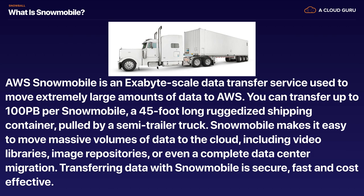Snowmobile is just insane. It's an exabyte-scale data transfer service used to move extremely large amounts of data to AWS. You can transfer up to 100 petabytes per Snowmobile. It's basically a 45-foot-long ruggedized shipping container pulled by a semi-trailer truck, making it easier to move massive volumes of data to the cloud, including video libraries, image repositories, or even a complete data center migration. Transferring data with Snowmobile is secure, fast, and cost-effective.